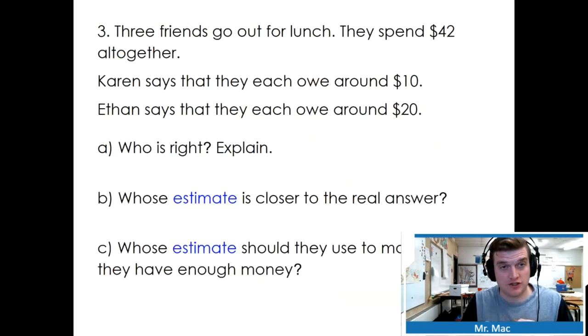Three friends go out for lunch. They spend $42 together. Karen says that they each owe around $10. Ethan says they each owe around $20. Who is right? Explain. I'm going to leave this question for you to do at home. We'll talk about it one day in our morning lesson. See you then.